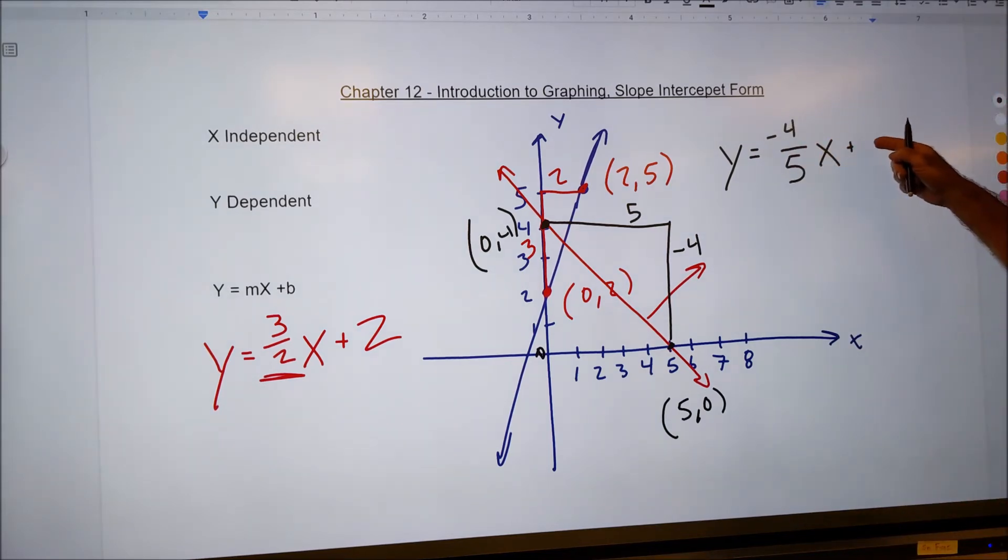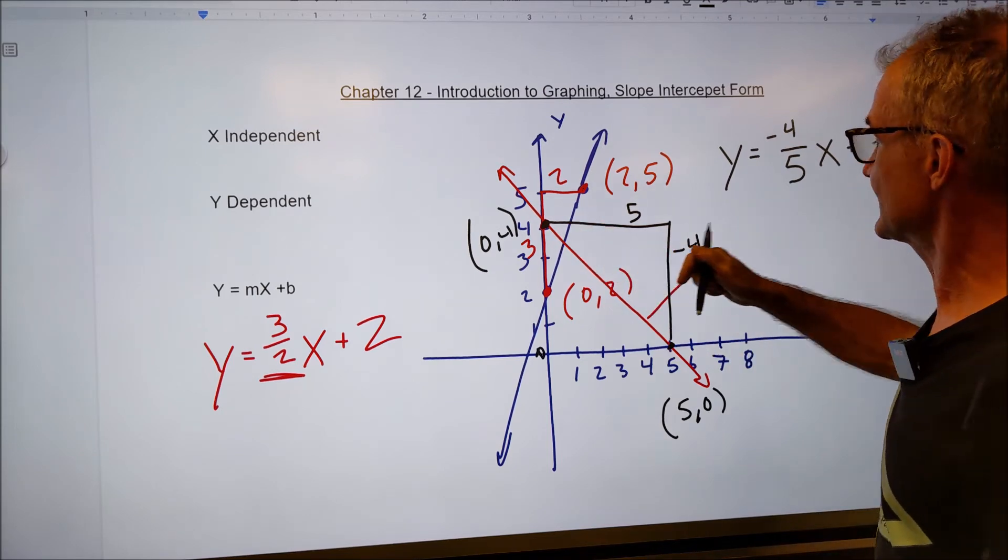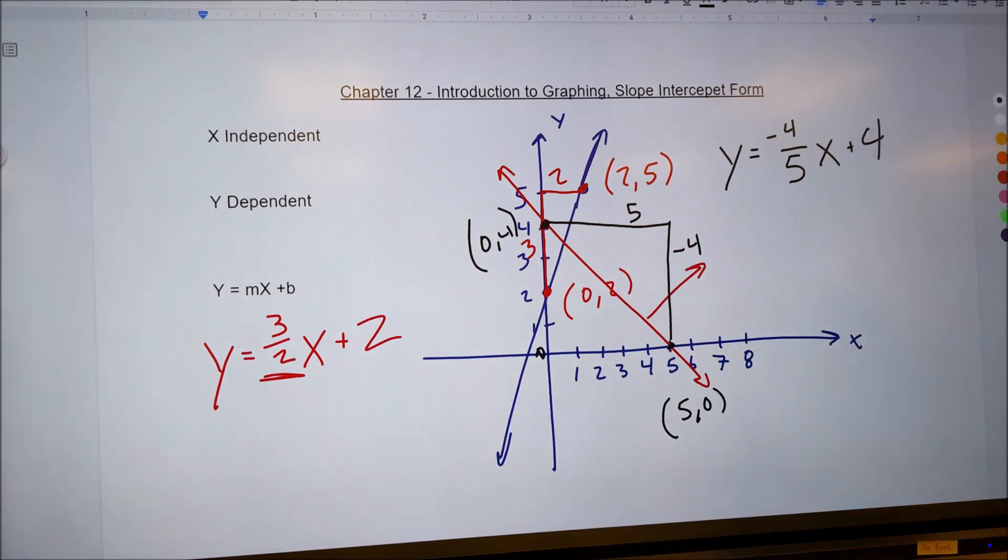And my y-intercept, my b value, as it crosses at four, it's going to be crossing at four.